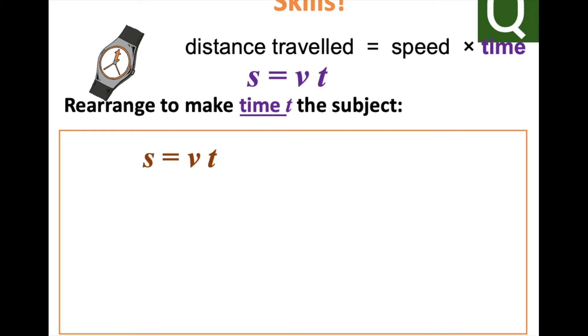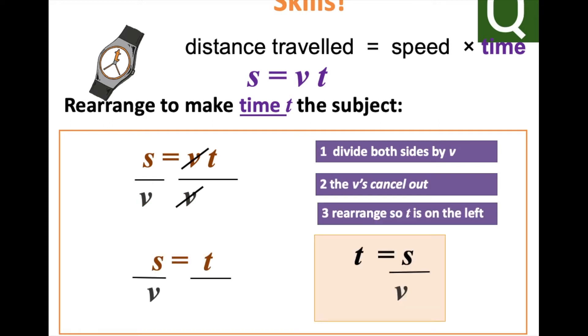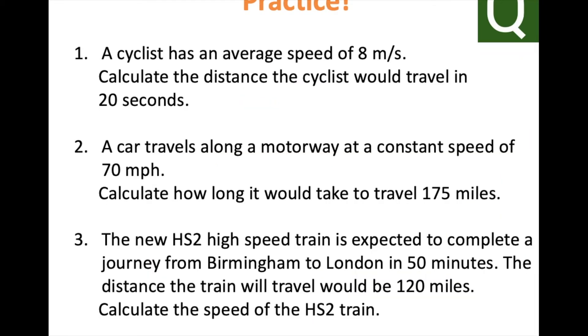If we wanted to calculate the time, rearrange the equation so that we are looking for speed divided by distance will give us the time. So outlined here in the bottom right, time equals speed divided by distance.